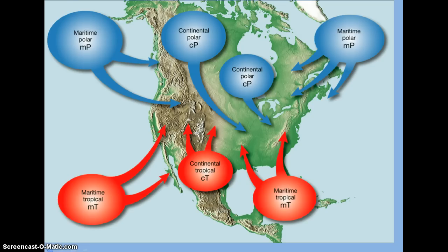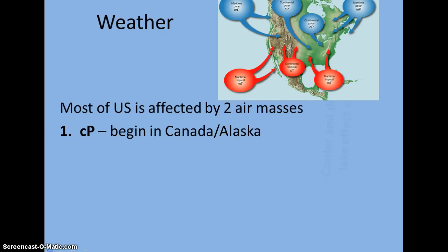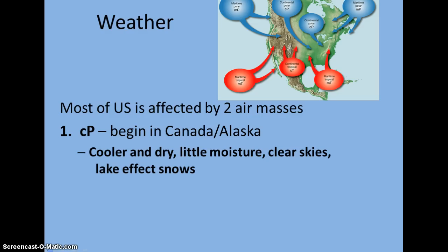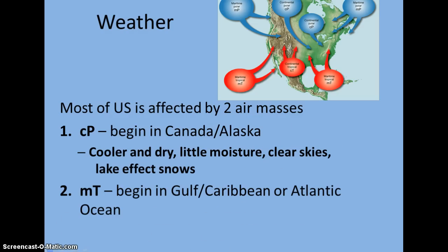Here's a larger map so you can see a bit better. The two main air masses that influence us in the United States are the continental polar air masses coming from up in Canada and working their way down through central United States toward the east coast, and then the maritime tropical air masses forming in the Gulf and in the southern Pacific and then working their way into the United States. Most of the United States is affected by those two main air masses.